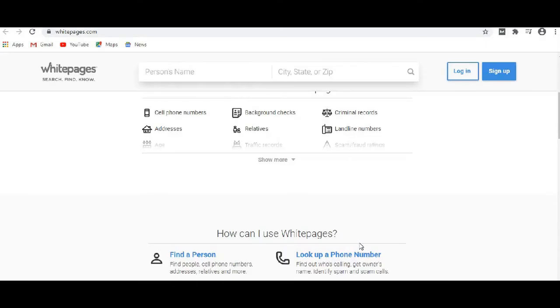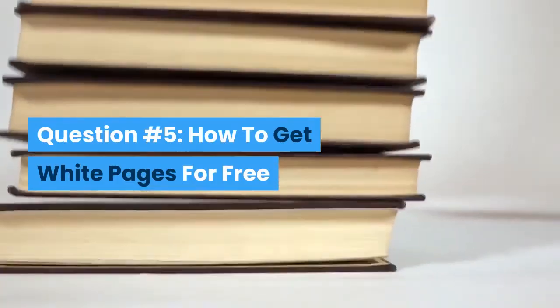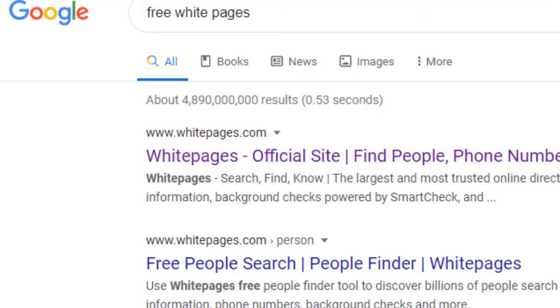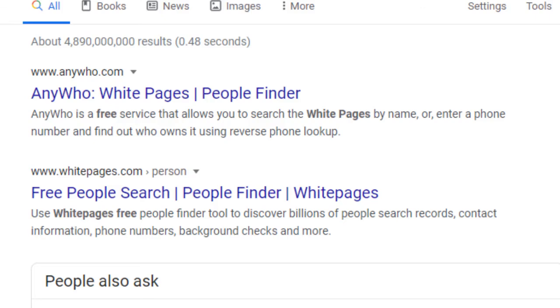Alternatively, if you have a name and address, you can use it to find the phone number of the person. Question number five, how to get white pages for free? You can simply Google free white pages and try out the list that will show up there.